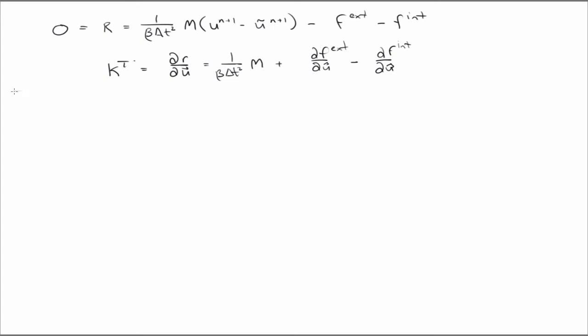So flowchart for implicit would be initialized. Again, initial velocity, initial displacement, initial stress at time zero. Compute F zero.